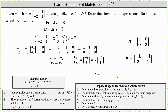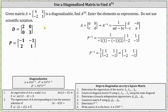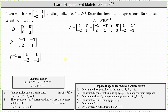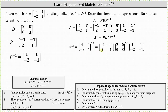The last step to finish the diagonalization is to find the inverse of matrix P. Using the formula for the inverse of a two-by-two matrix, we have P inverse equals one, one, negative two, negative one. So now that we have P inverse, we know the diagonalization of matrix A, where A equals P times D times P inverse. From here, A to the power of 33 is equal to matrix P times matrix D raised to the 33rd power times the inverse of matrix P.